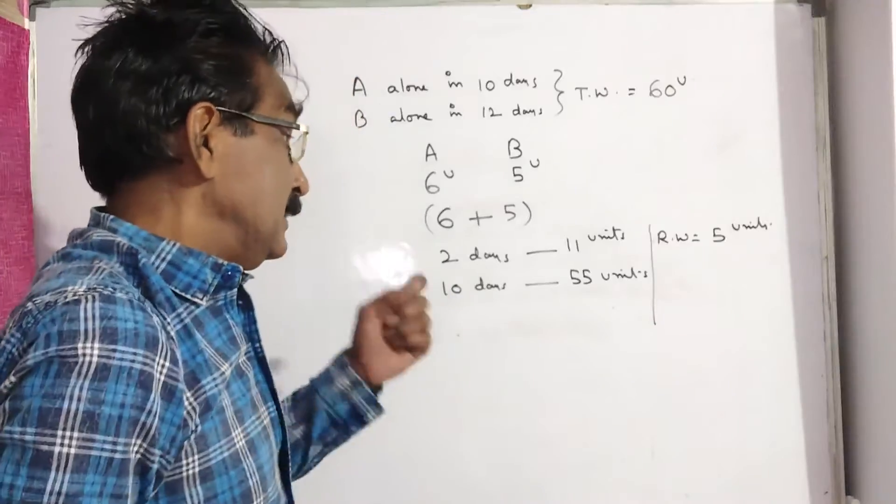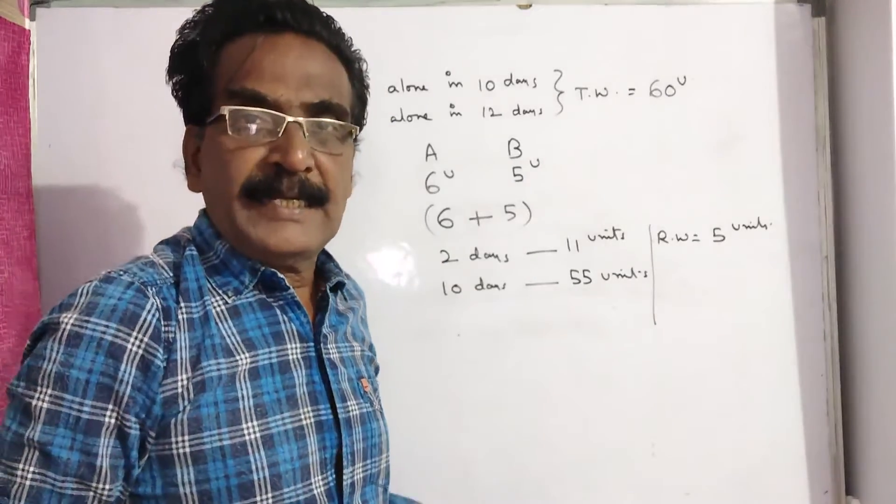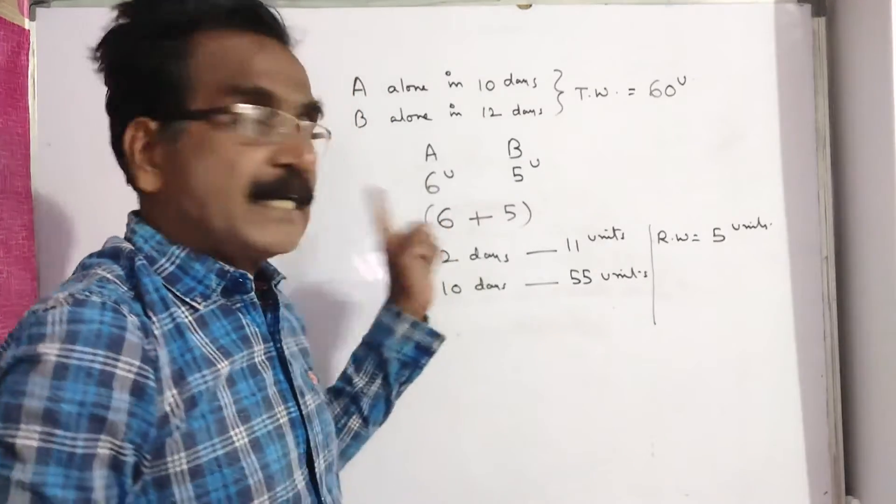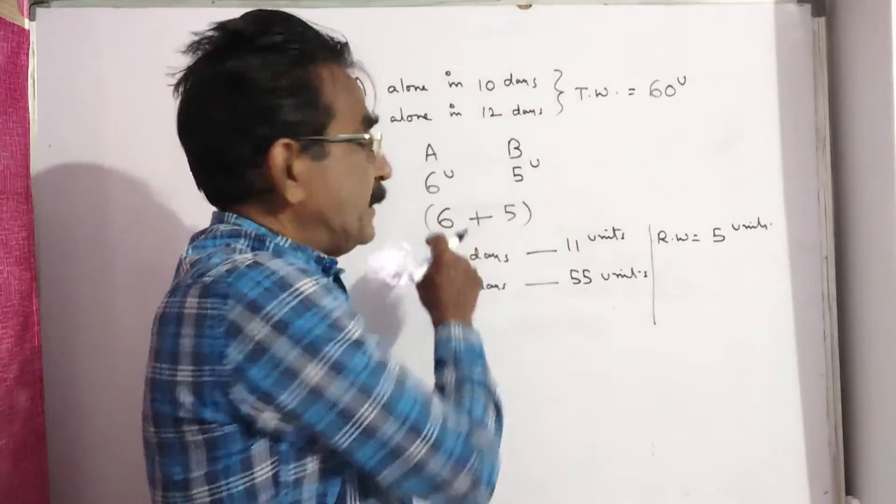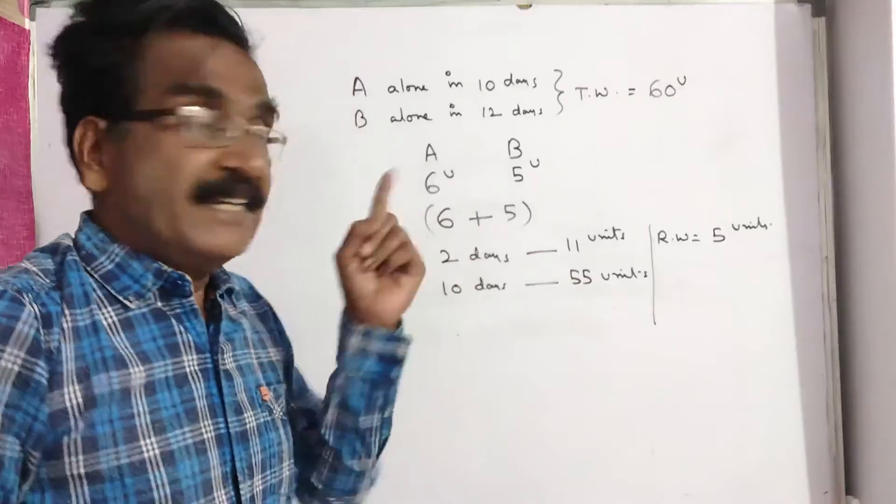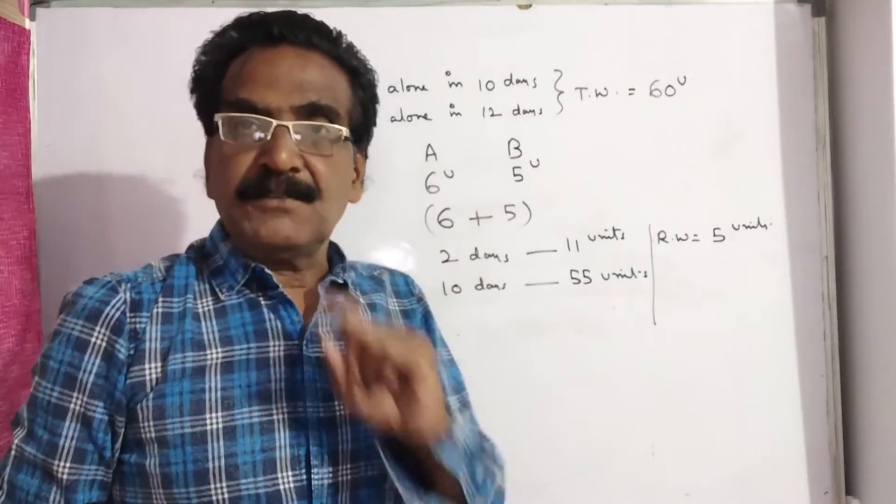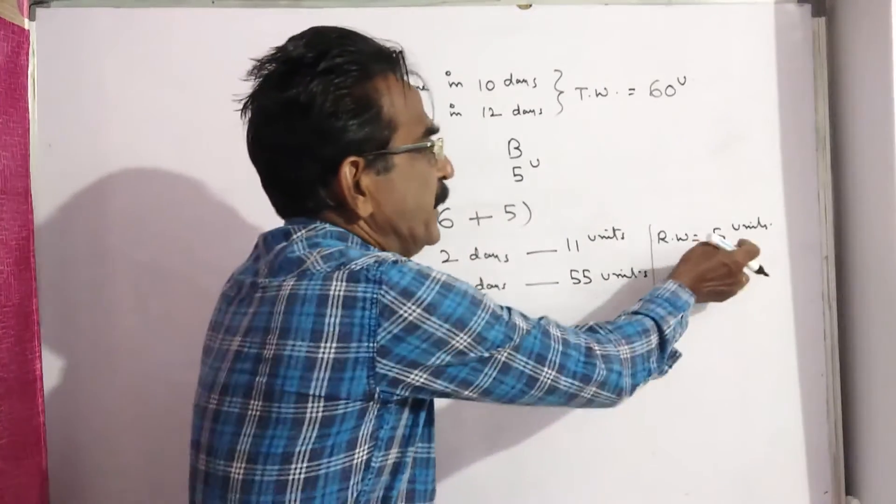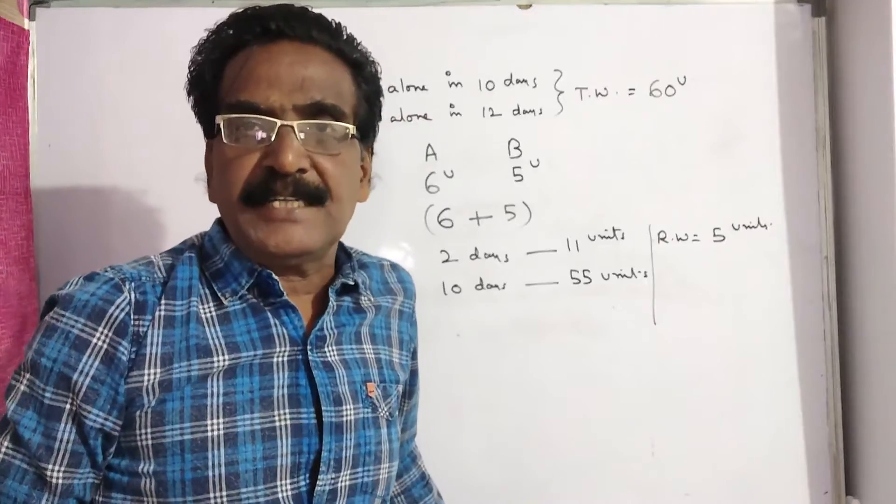On the 11th day, A comes to the work. What is the capacity of A? A can do 6 units of work in one day, but the remaining work is only 5 units.